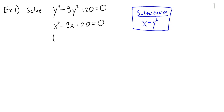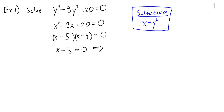This one is fairly friendly towards factoring. We can factor this into x minus 5 times x minus 4, and we have broken our equation into two linear equations. So x minus 5 equals 0 gives us x equals 5, and x minus 4 equals 0 gives us x equals 4. We may be tempted to stop here, but we need to remember that we were originally asked to solve an equation with y's, not x's, because x is something we made up along the way.